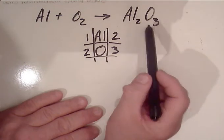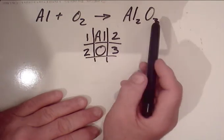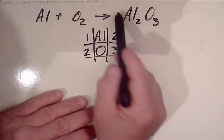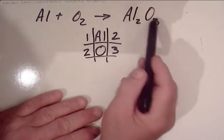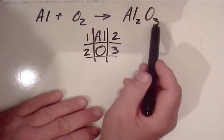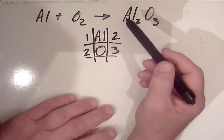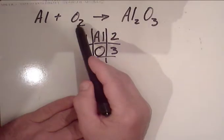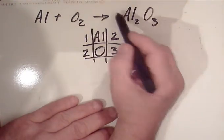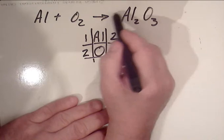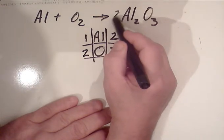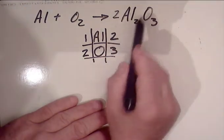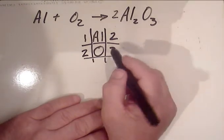We could balance the aluminums, but let's go with the oxygens because it has an odd number. That one's more difficult. I have three on the product side and two on the reactant side, so we can do basic multiplication and put a two in front of the aluminum oxide.